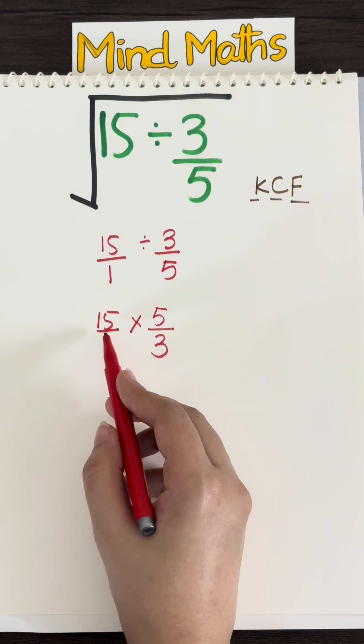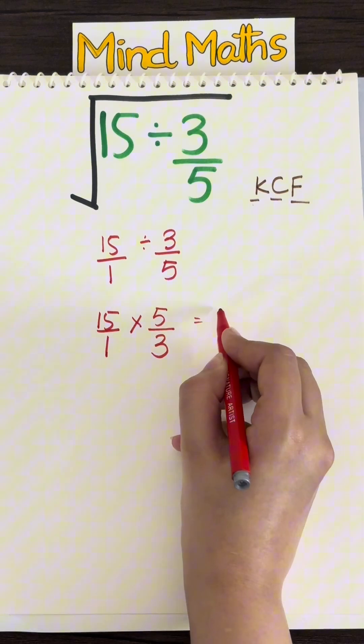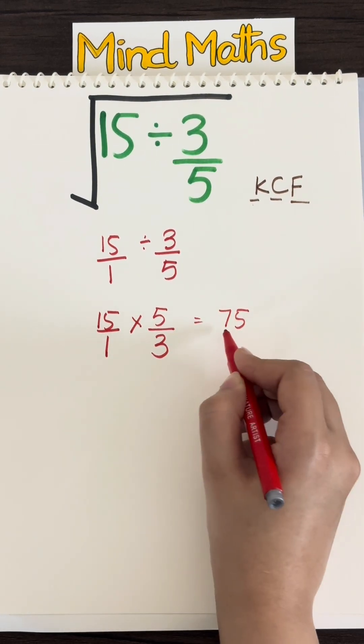Now I am going to multiply them normally. So 15 times 5 is going to give me 75 and 1 times 3 is simply 3.